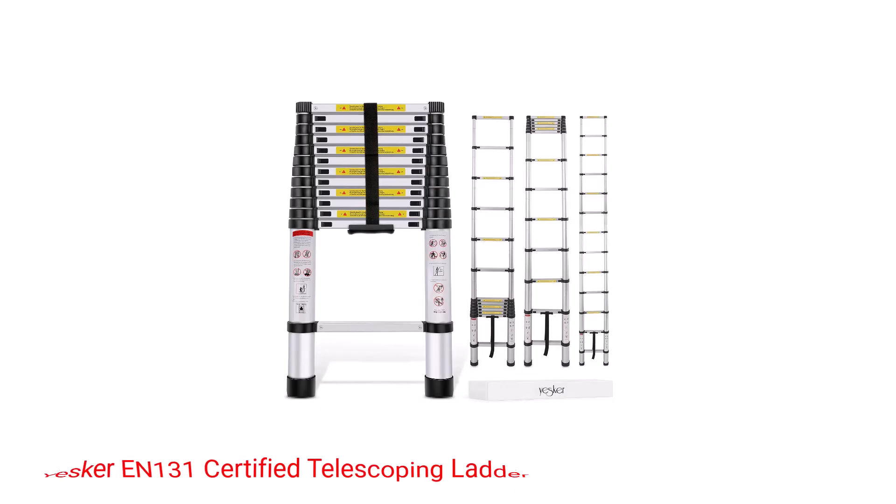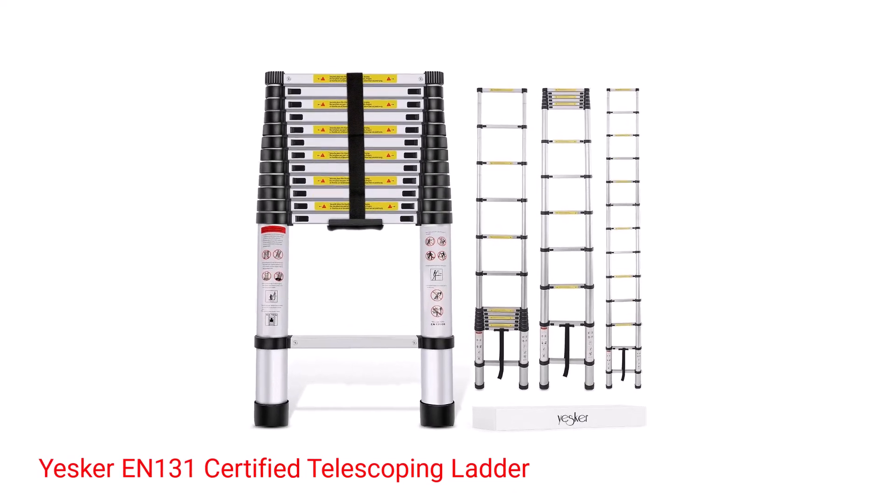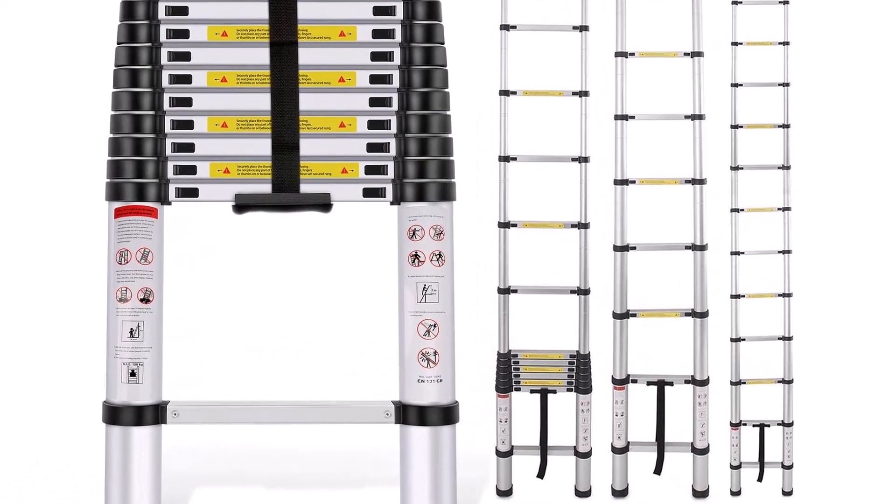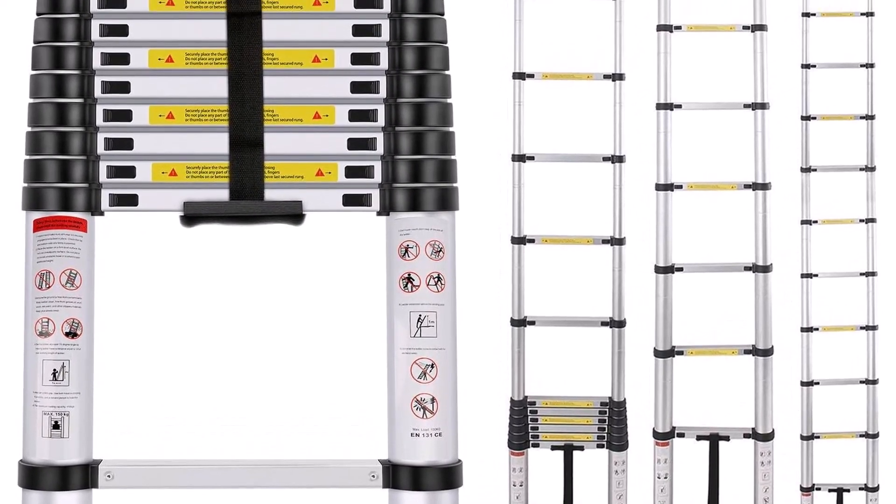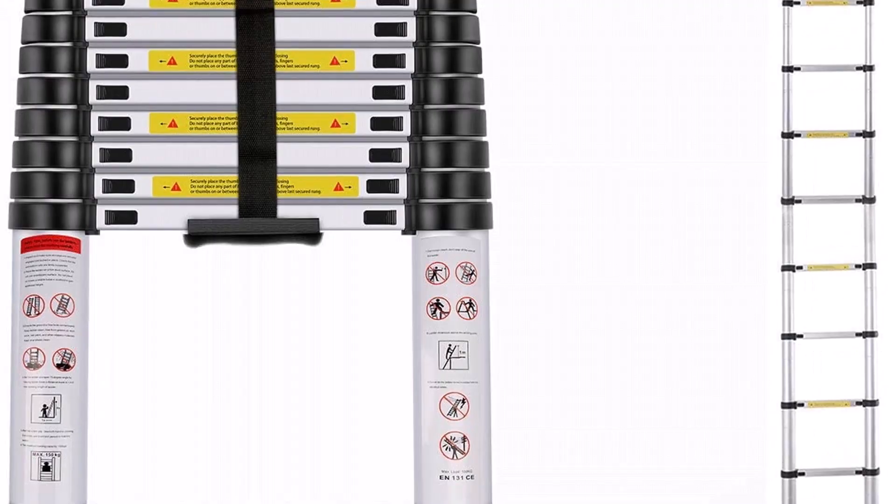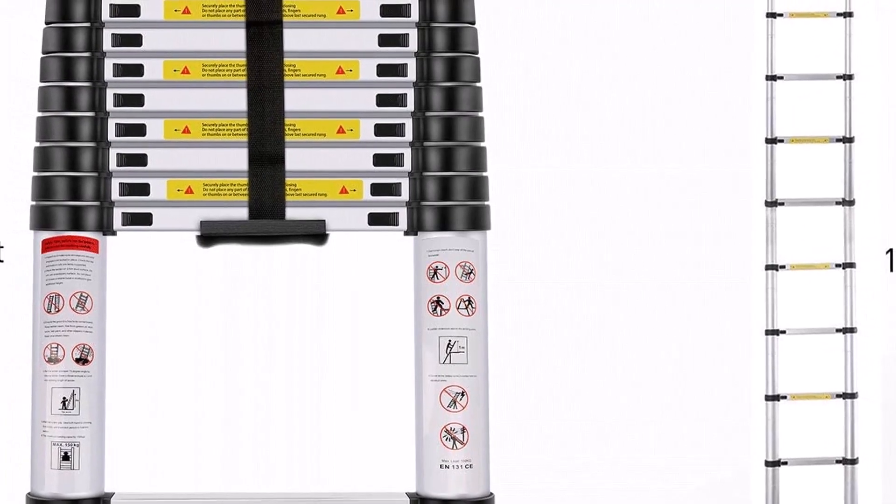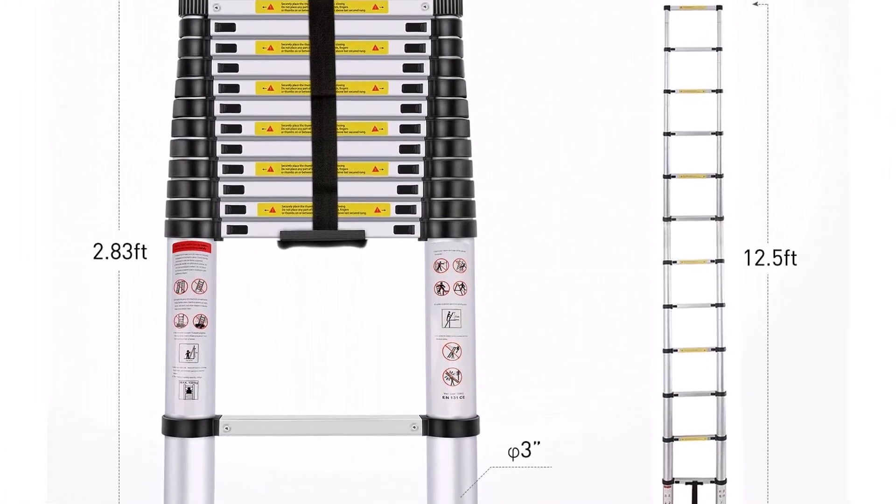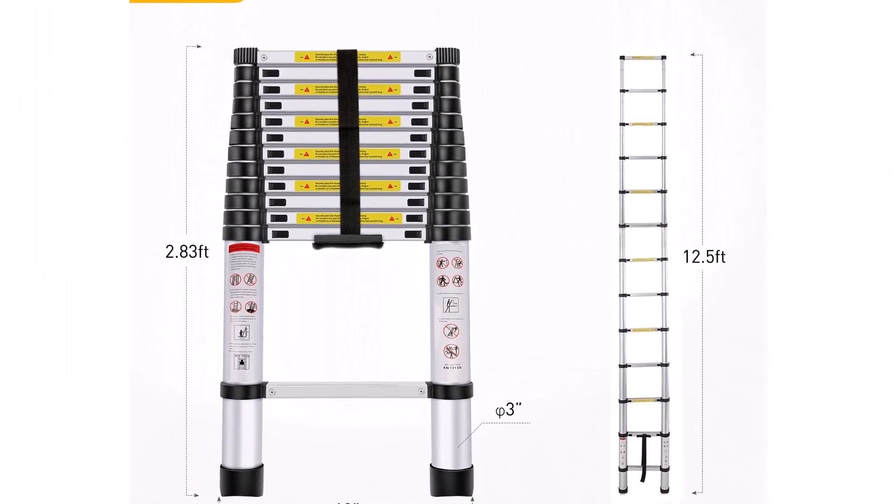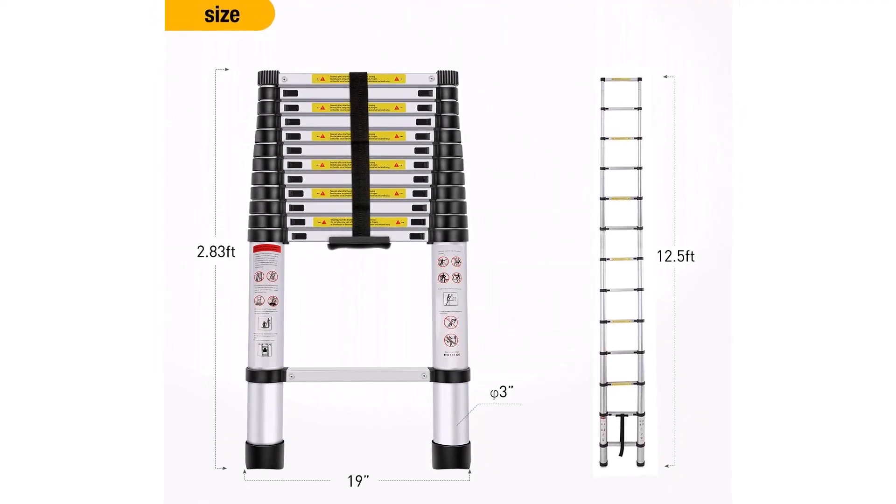Number 5: Yesker EN 131 Certified Telescoping Ladder. Constructed of heavy-duty 48-centimeter aluminum alloy pipes, the Yesker telescoping ladder is a worthy alternative to pricey systems that feature an almost identical styling and design. The ladder itself can be easily adjusted in one-foot increments, maxing out at 12.5 feet for those jobs or tasks that require completion at different heights.